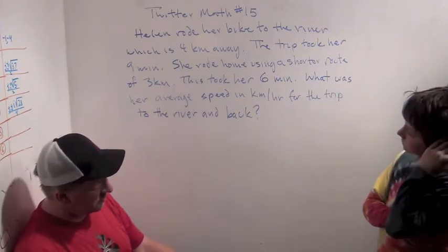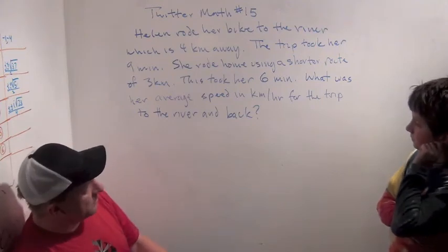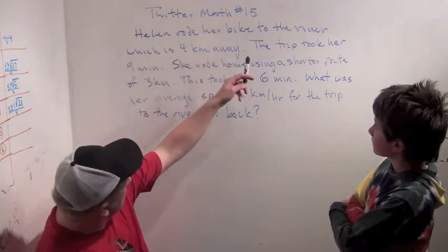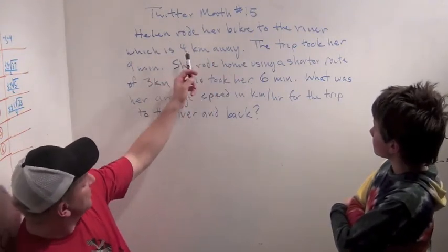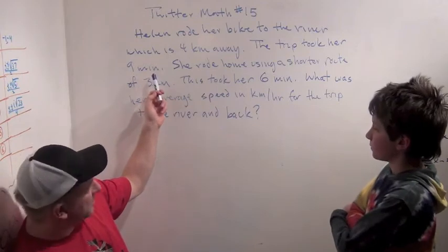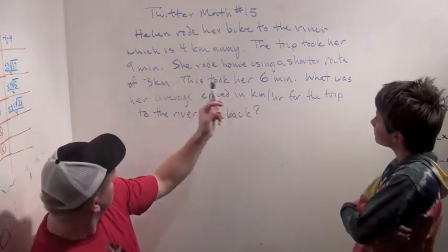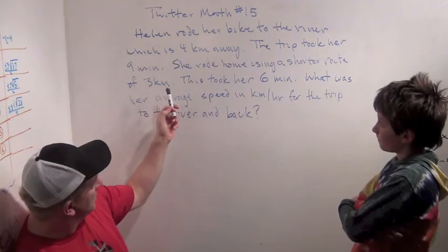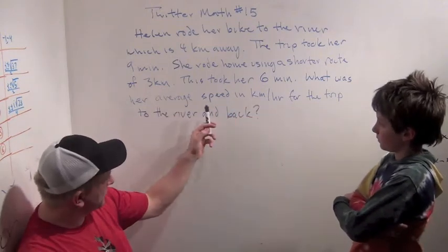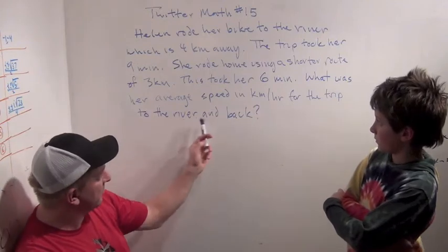For 15-year-olds, though — I just want to talk it through if it's too hard. I'm curious how you'll approach it. Helen rode her bike to the river which is 4 kilometers away. The trip took her 9 minutes. She rode home using a shorter route of 3 kilometers. This took her 6 minutes. What was her average speed in kilometers per hour for the entire trip?